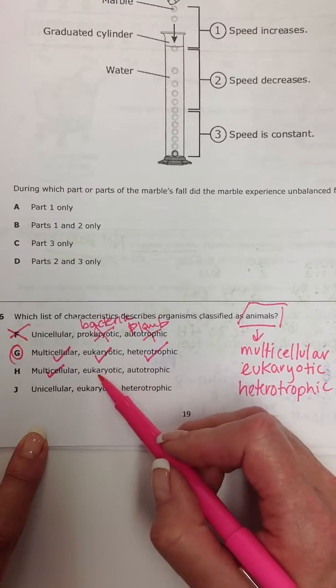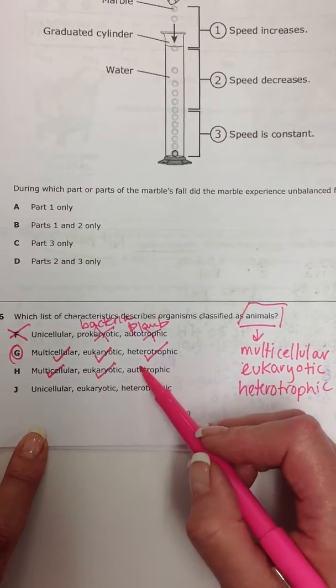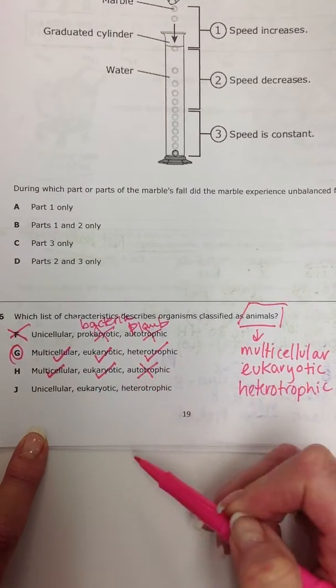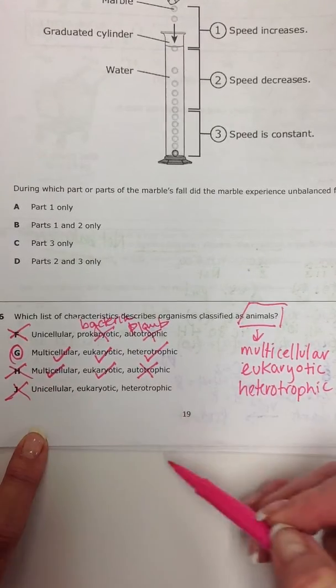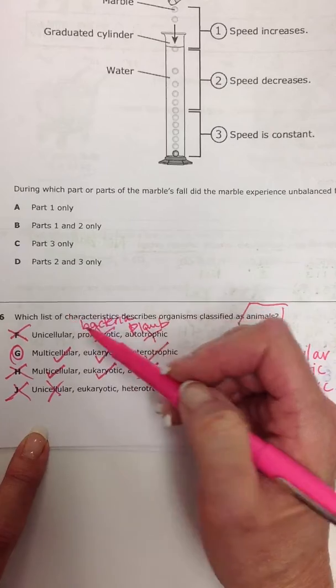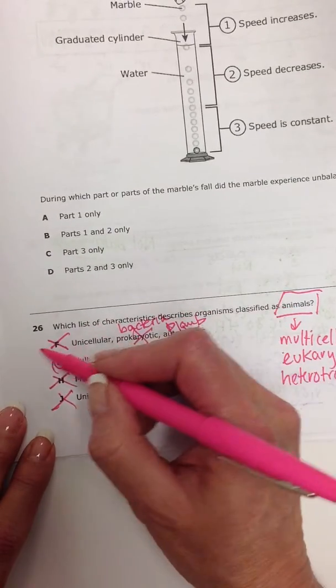Multicellular, yes. Eukaryotic, yes. Autotrophic, only a plant. That's not us. Unicellular, no, we're not made of a single cell, so we're done. Our answer choice will be G. Thank you.